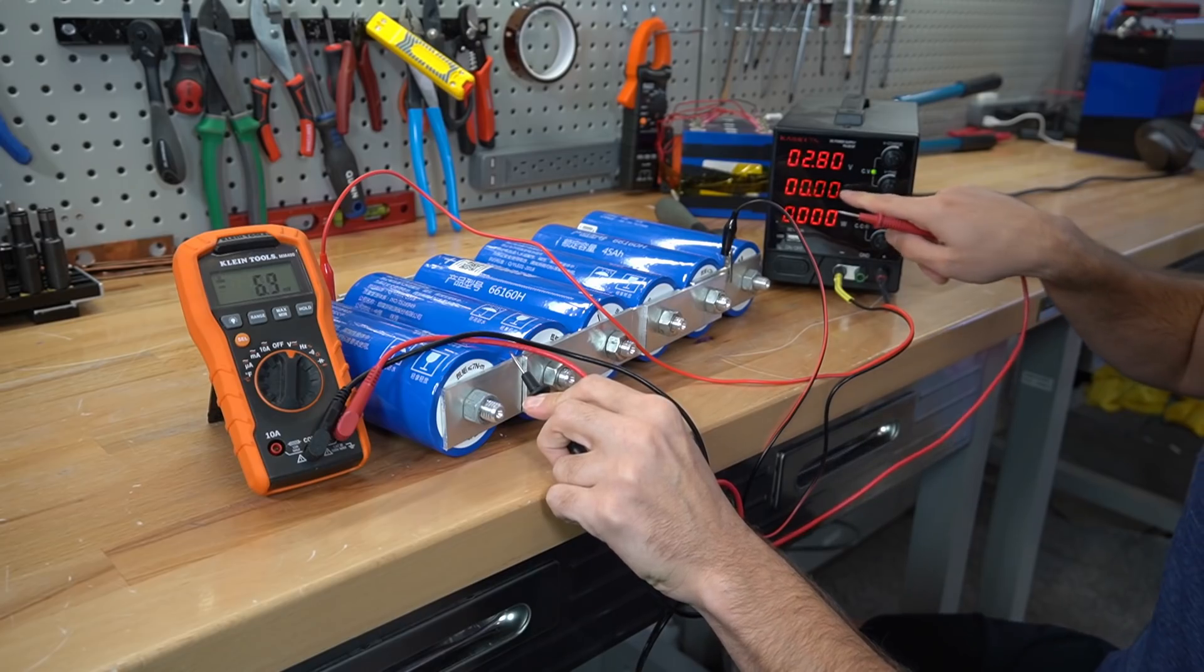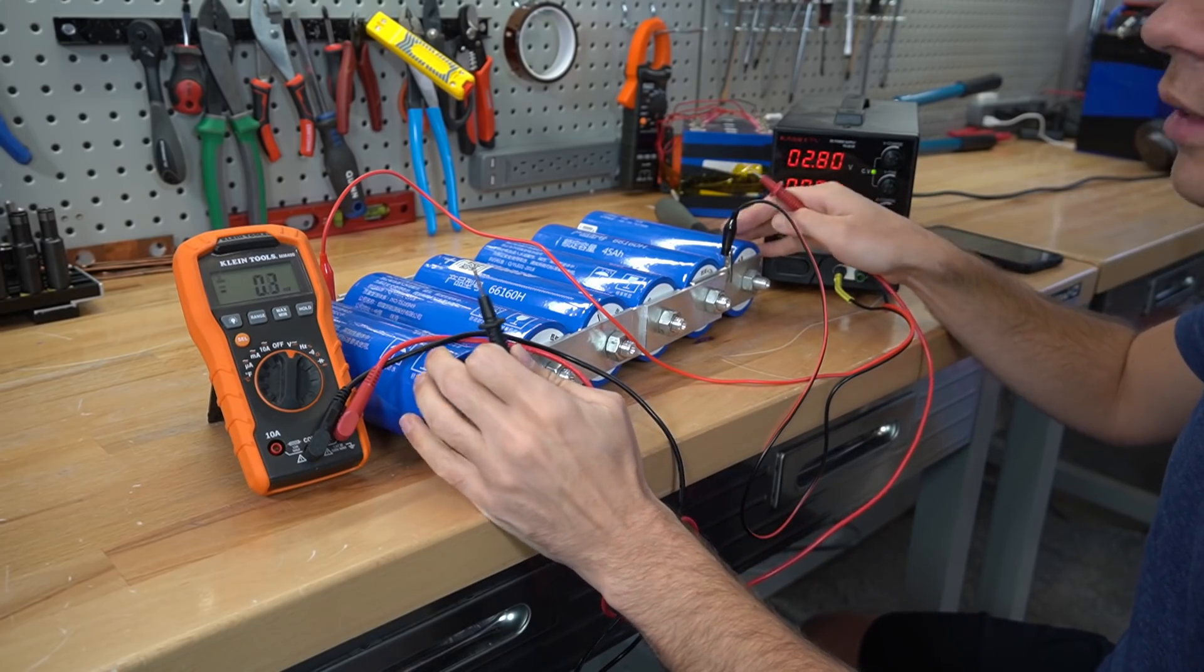Now we're at 2.8 volts and the current has dropped to zero. So these cells are top balanced and fully charged.